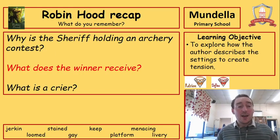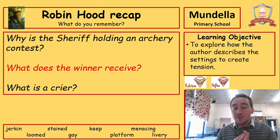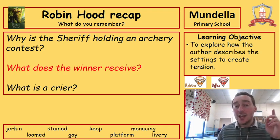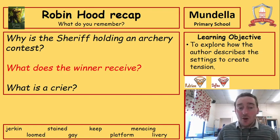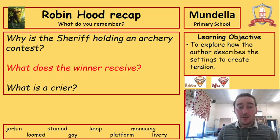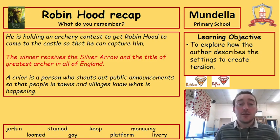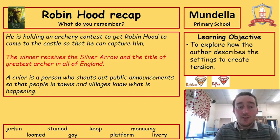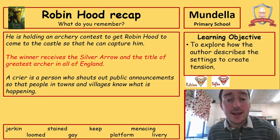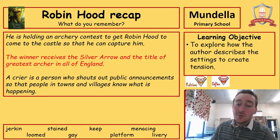Three questions: Why is the sheriff holding an archery contest? What does the winner receive? And what is a crier? See if you remember those. The sheriff is holding an archery contest to get Robin Hood to come to the castle so that he can capture and arrest him. The winner receives the silver arrow and the title of greatest archer in all of England. A crier is a person who shouts out public announcements so that people in towns and villages know what is happening. Well done if you got all of those.